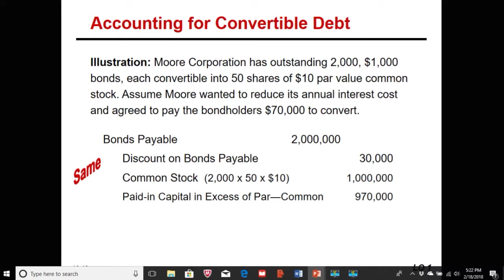To illustrate a sweetener: Moore Corporation has outstanding $2,000,000 in bonds convertible to 50 shares of $10 par value common stock. The bonds convert to equity at the $1,970,000 book value. To encourage conversion and reduce annual interest costs, the company agreed to pay bondholders $70,000. This creates a debt conversion expense of $70,000 and outgoing cash of $70,000.